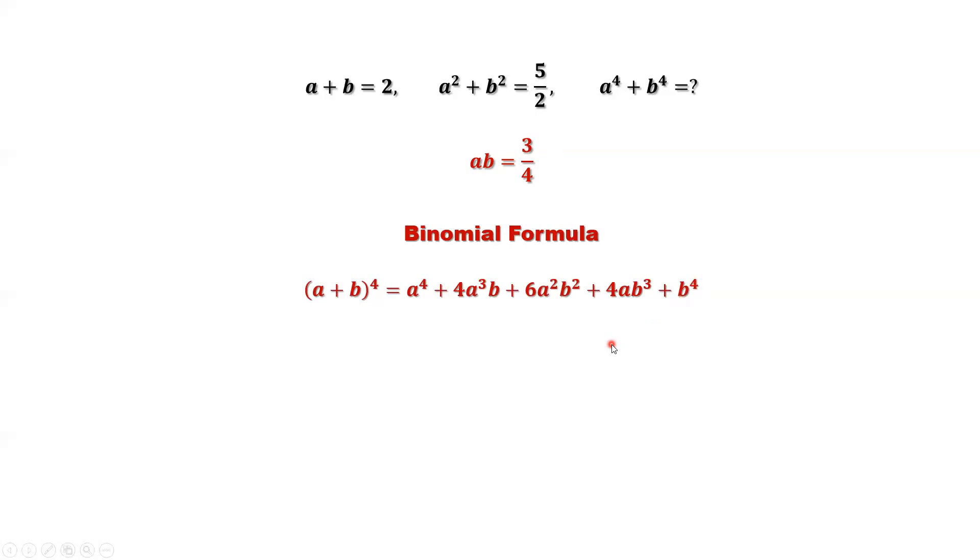Do some simple algebra. What we want to find is the result for a to the power 4 plus b to the power 4. We can solve this equation for a to the power 4 plus b to the power 4. Move the remaining part to the other side. That's a plus b to the power 4. This term, that's 6a squared b squared, move to the other side, becomes negative 6a squared b squared.